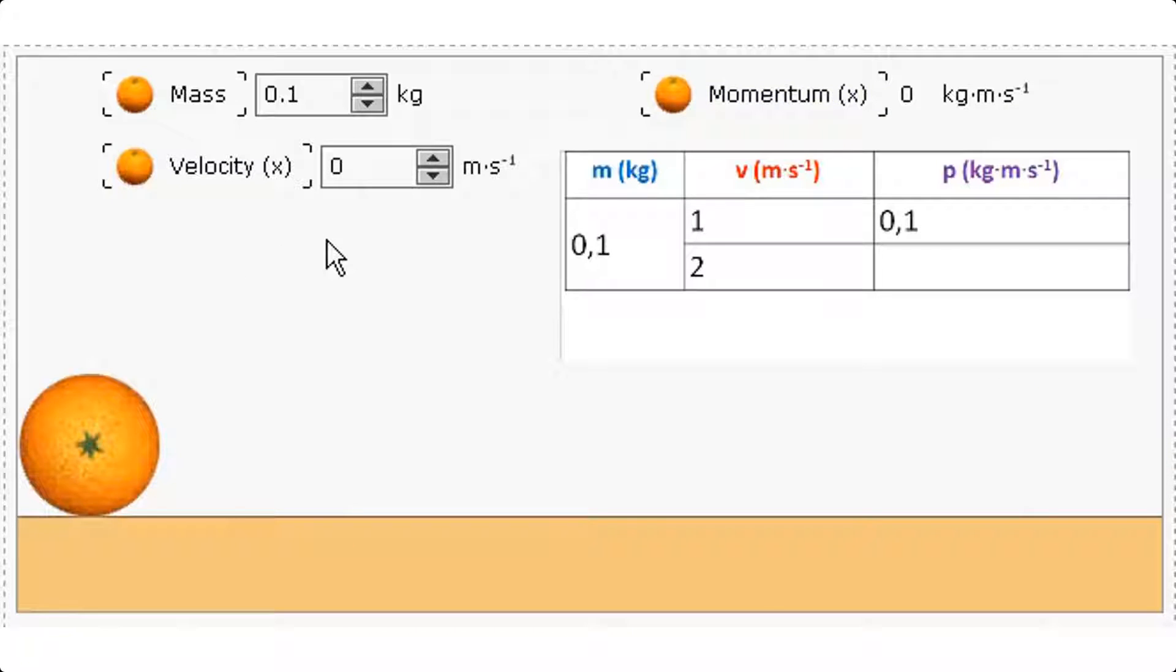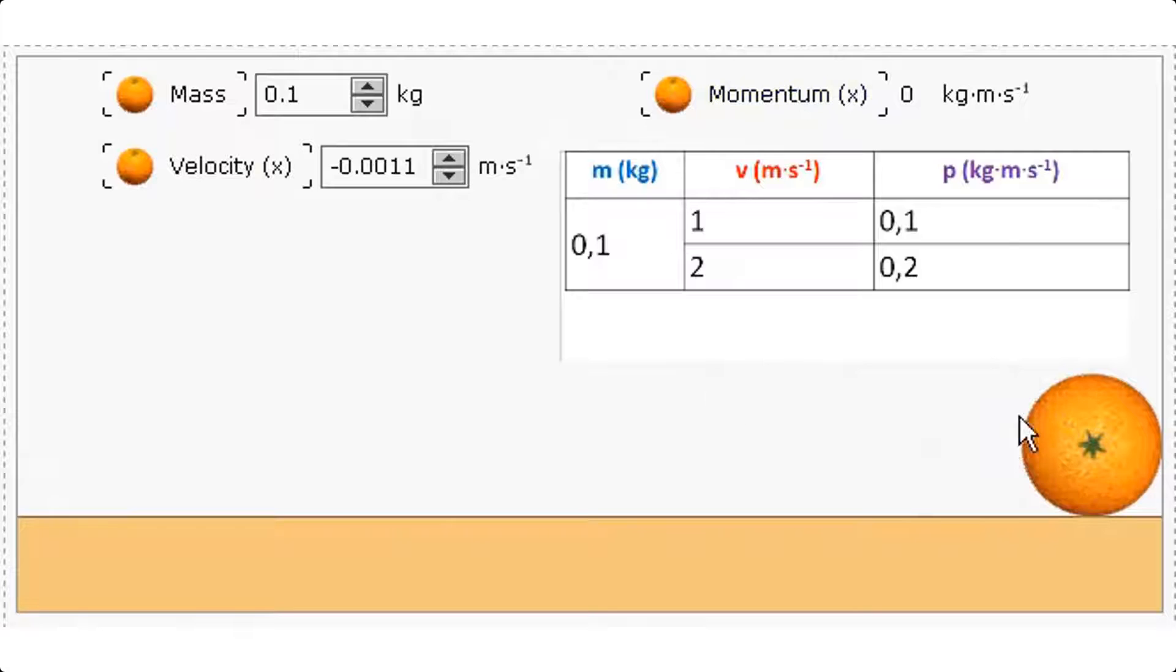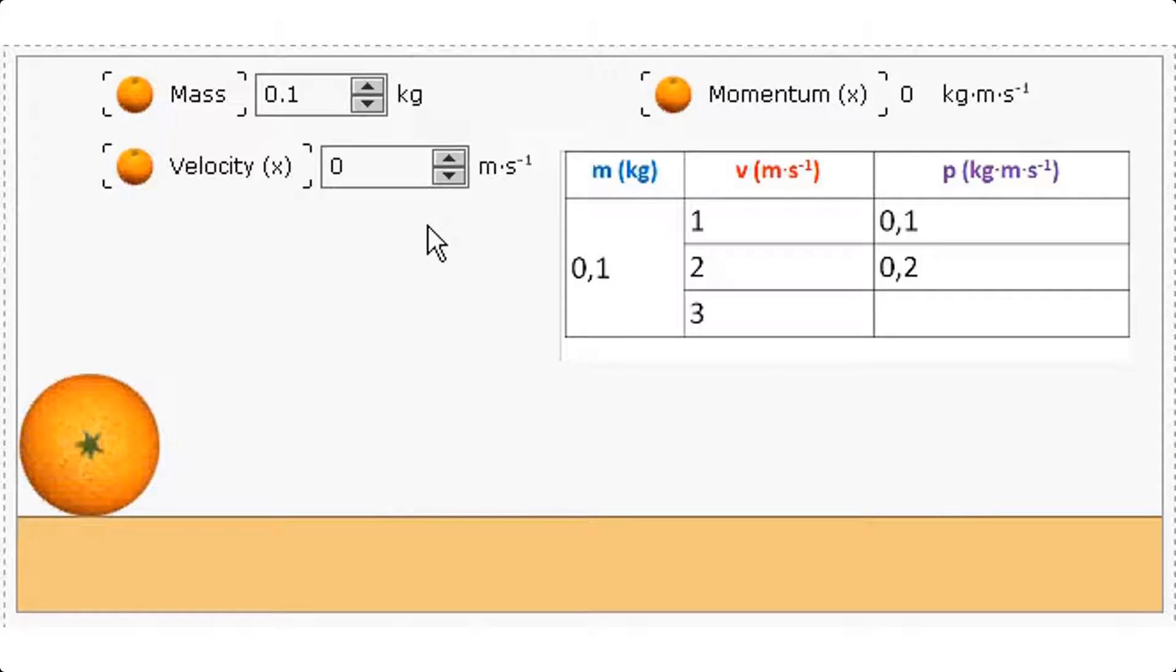As I increase the velocity now to 2 meters per second, should the momentum be greater than just now or less? Watch the momentum reading as I do this. The momentum is 0.2 kilogram meter per second while the object is moving. If I increase the velocity now to 3 meters per second, how will that affect the momentum? 0.3 kilogram meter per second.